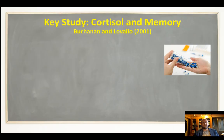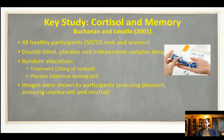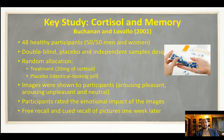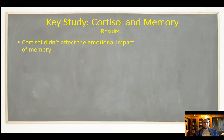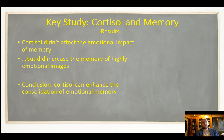The study that shows this is from Buchanan and Lovallo. They had 48 healthy participants, split 50/50 — one group took cortisol and one took a placebo. They were shown different types of pictures, asked to rate the emotional impact, and then after a week asked to recall what they remembered. They found cortisol didn't affect the emotional response to images, but it did affect the ability to remember them — those who took cortisol had better memory for images they found emotional. So the release of cortisol during fear can enhance consolidation — the transfer of emotional memory from short-term to long-term.